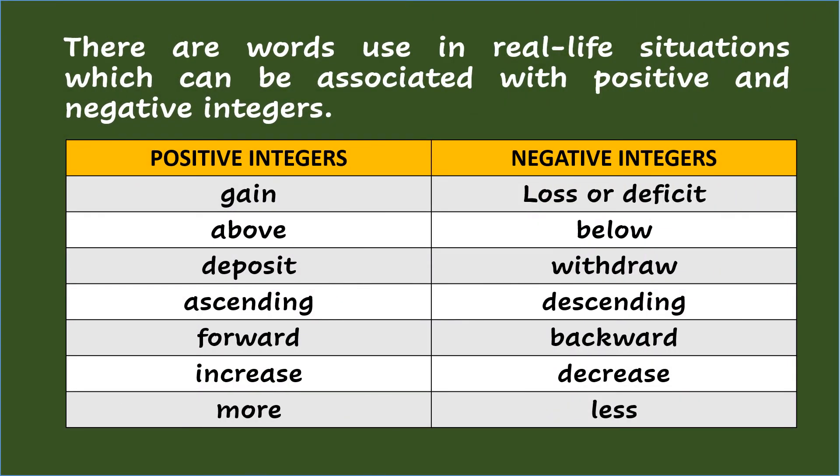There are words used in real-life situations which can be associated with positive and negative integers. Words associated with positive integers are gain, above, deposit, ascending, forward, increase, and more. The counterpart negative integers are loss or deficit, below, withdraw, descending, backward, decrease, and less.